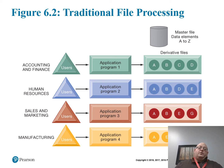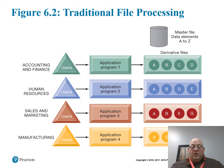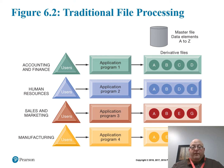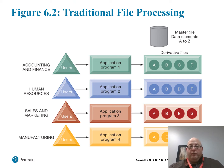This slide depicts the traditional file processing system. We had four departments — manufacturing, sales, human resources, and accounting — all with their own users, managed by the departments themselves instead of in a directory. We see four programs accessing the users and four different sets of files with one master file. So we have duplicated data, possibly inconsistent data, very poor quality. With poor quality data, we really can't make good, sound decisions.